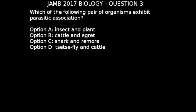Option D, tsetse fly and cattle — the tsetse fly is a parasitic organism and feeds on the blood of the cattle. Not only does it feed on the blood of the cattle, it also infects the cattle with trypanosoma species, which results in what we call Nagana disease in the cattle. In this case, the tsetse fly is benefiting while the cattle is also at a loss. This is a typical example of parasitic association, so option D is the correct answer.